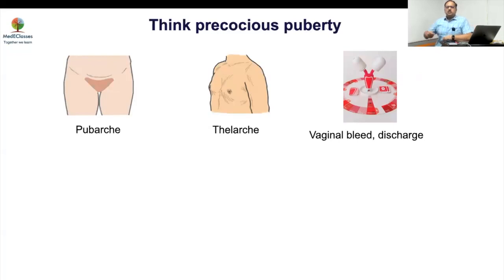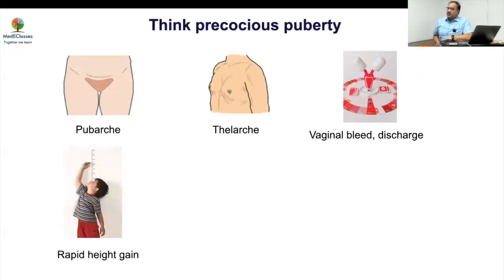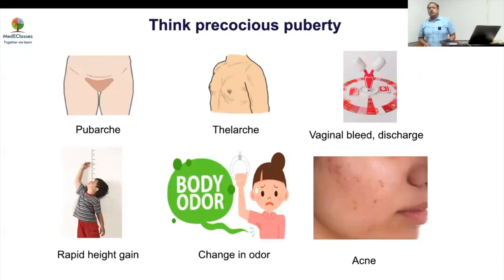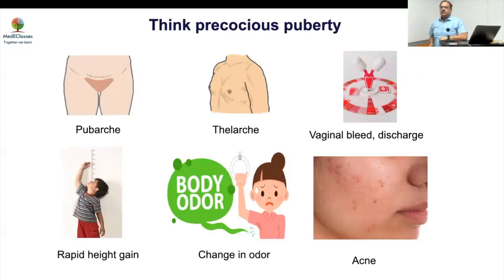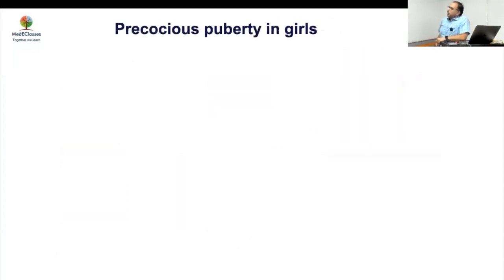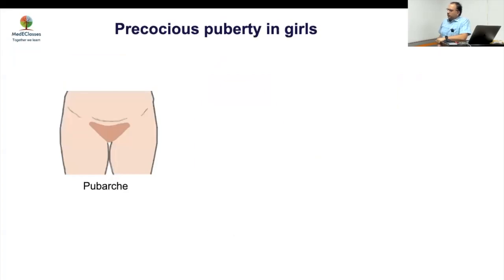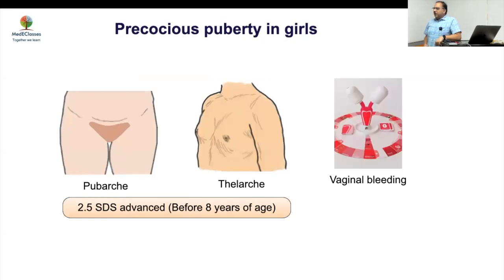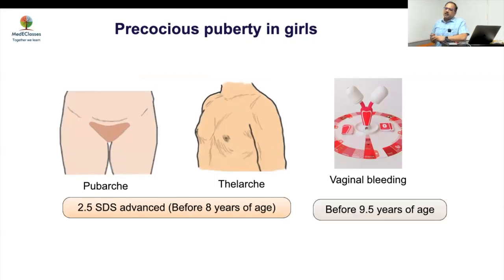Acne and other adrenarche-related changes — rapid height gain, change in odor, and acne — may also indicate precocious puberty, but most children present directly with breast development or pubic hair. The definition: pubarche and thelarche below 2.5 SD from the mean (roughly 8 years) or vaginal bleeding below 9.5 years are significant.